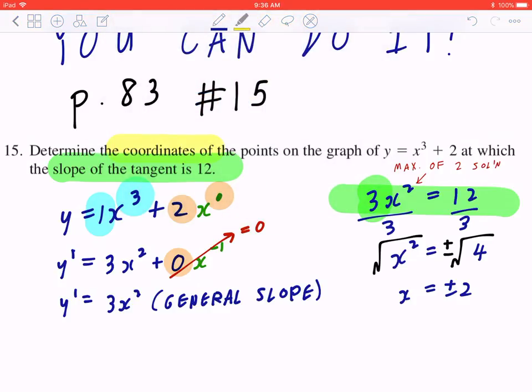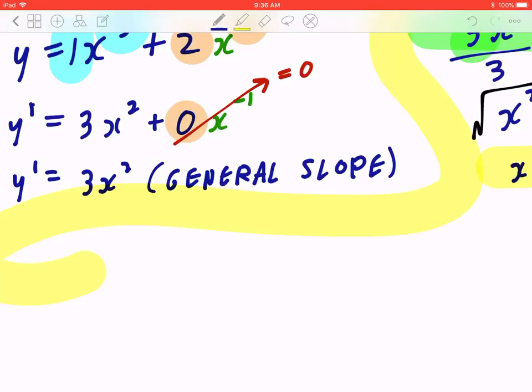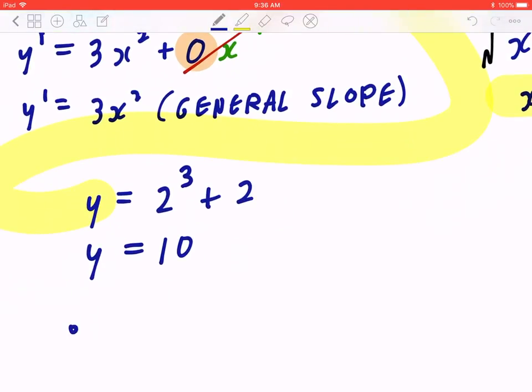To find the exact coordinates, you have to take the x values and plug them back into the original function. In the first case, for x equal to 2, that's going to be 2 to the power of 3 plus 2. So y equals 8 plus 2, which is 10. Therefore, the first coordinate is going to be (2, 10).